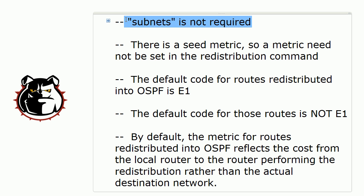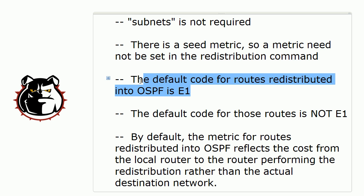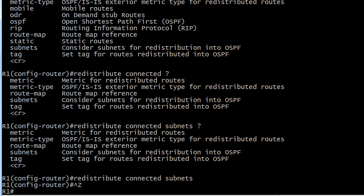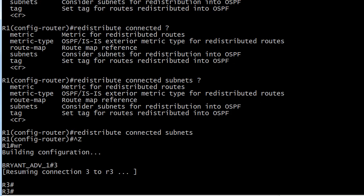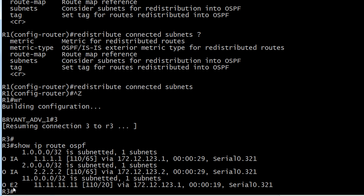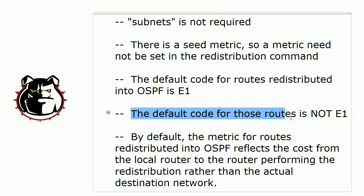Subnets is not required — that ended up being true. I also did not set a seed metric, so a metric need not be set in the redistribution command — that's true. You can change the default seed metric if you want to, and what is that default seed metric? It's 20 — a very important value. Now what's the default code for routes redistributed into OSPF? Going down to router 3, we see the route is OE2. E2 is actually the default, so statement three is false and statement four is therefore true — it's E2.